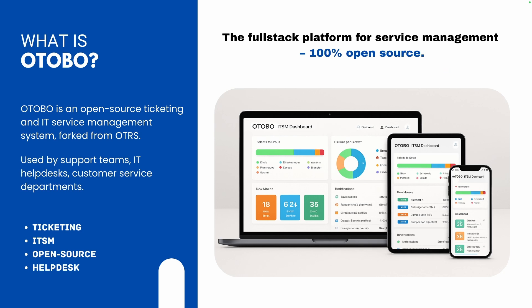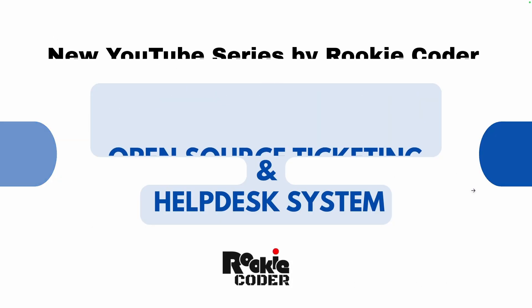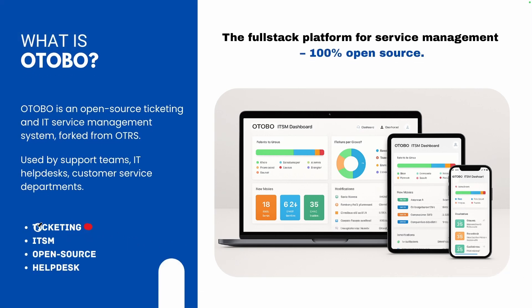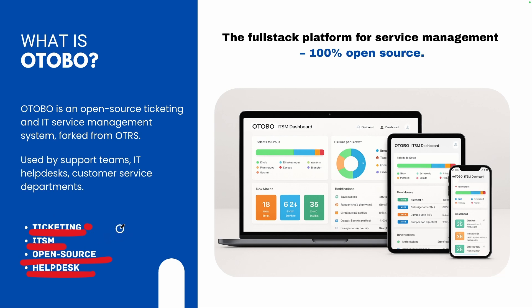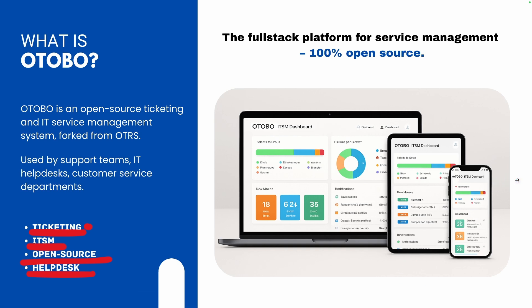As you can see on the slide, the key attributes are: ticketing, ITSM, open source, and help desk. It is completely open source and we can customize it according to our needs. We will cover how to customize and upgrade OTOBO in upcoming videos. Today we will talk about the details of OTOBO and its key features.